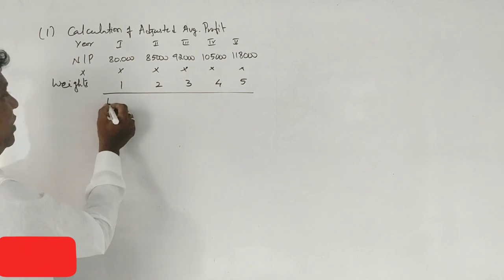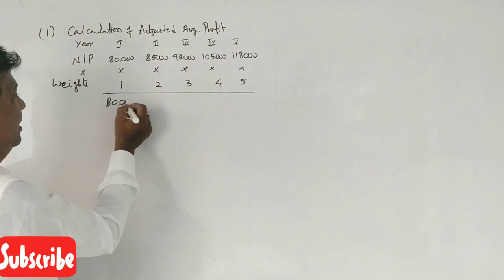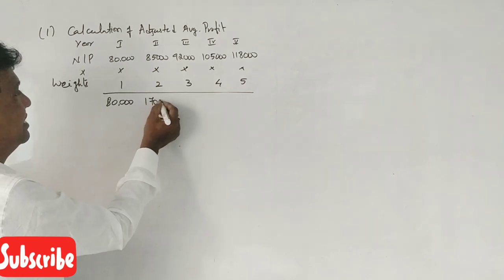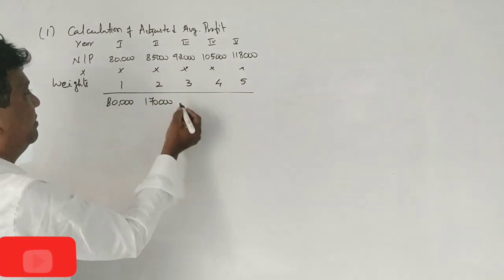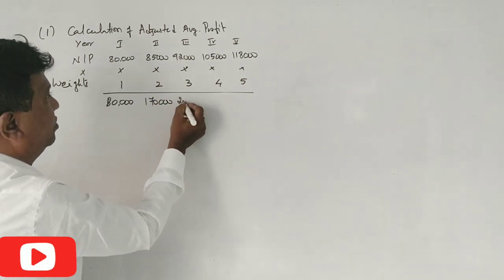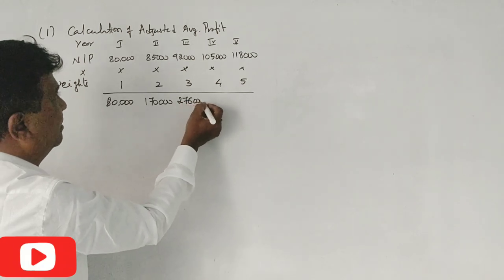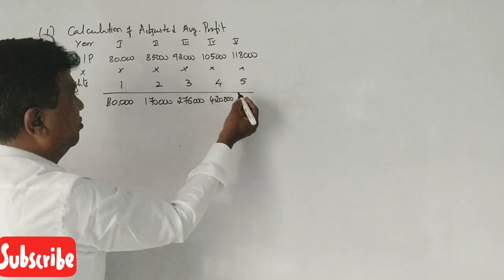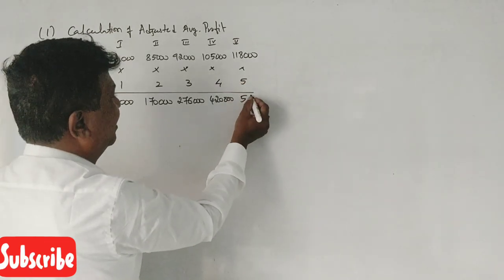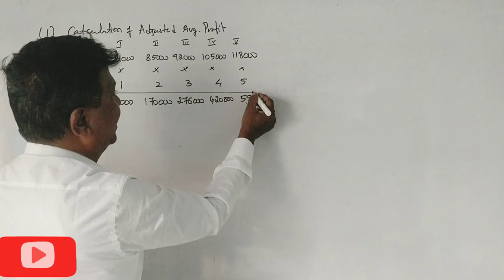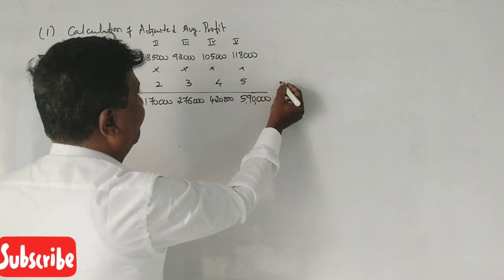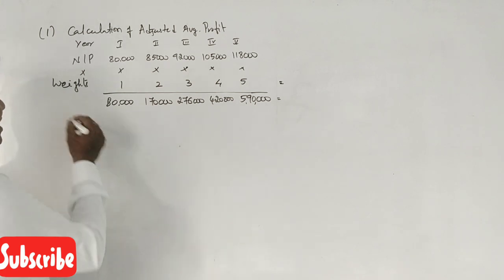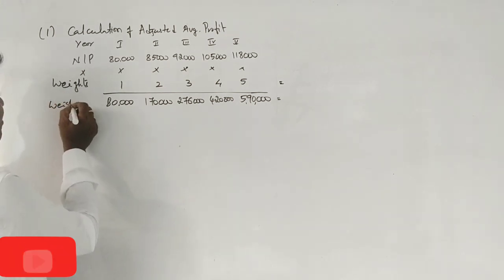80,000 × 1 = 80,000. 85,000 × 2 = 1,70,000. 92,000 × 3 = 2,76,000. 1,05,000 × 4 = 4,20,000. 1,18,000 × 5 = 5,90,000. The total of weights is 15, and the total weighted profits figure is calculated.